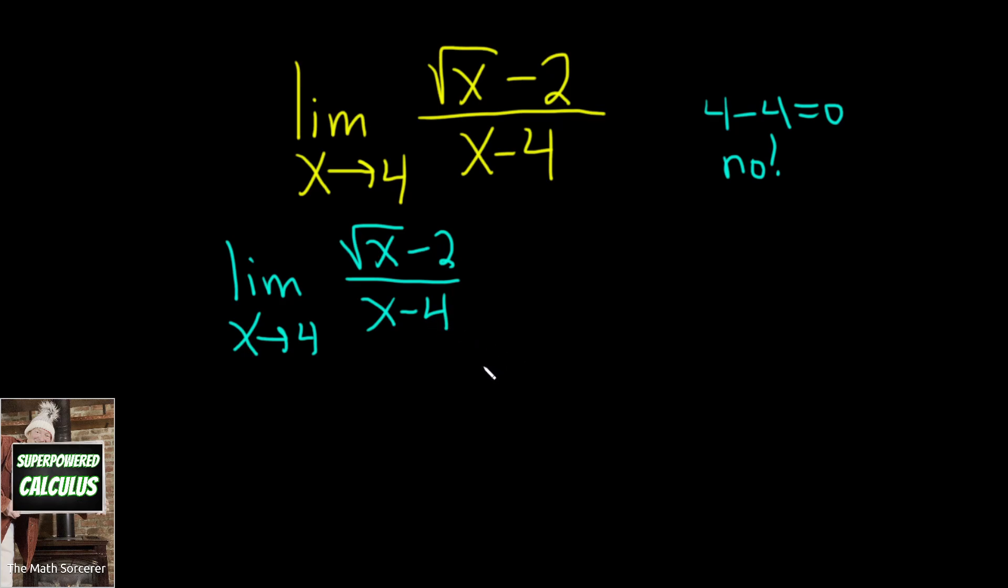And what we're going to do is called rationalize. We're going to rationalize the numerator, and we know to do that because we have this funny square root here. So what we can do is multiply by the square root of x plus 2 over the square root of x plus 2. Notice that this cancels, and it's equal to 1. So we're basically multiplying by 1, and that's why it's allowed. I'm going to go ahead and put these in parentheses just for clarity.